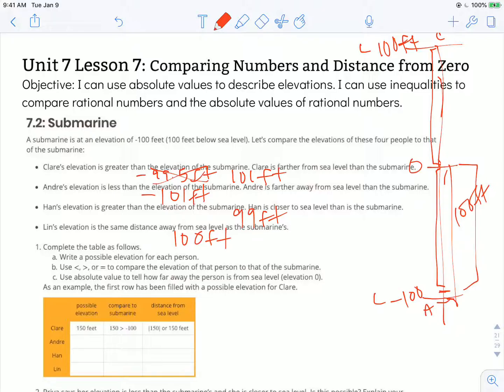Write a possible elevation for each person. So Claire, they already put one in of 150 feet, which would satisfy both of those statements. 150 is greater than negative 100 and the absolute value of 150 is 150 feet.